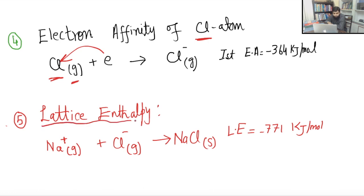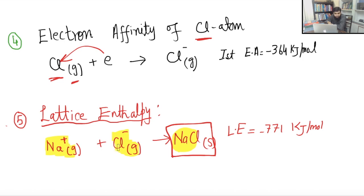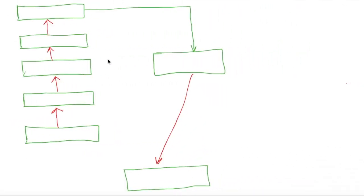The last term is lattice enthalpy — one mole of ionic compound is formed from its gaseous ions. Sodium and chlorine must both be in gaseous and ionic form. Lattice enthalpy is always exothermic because a bond is formed between the sodium ion and the chloride ion. The lattice enthalpy for NaCl is −771 kJ/mol.